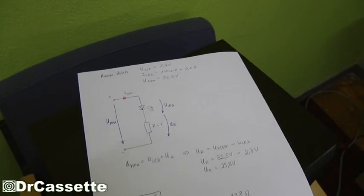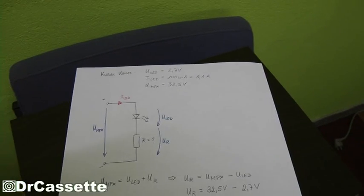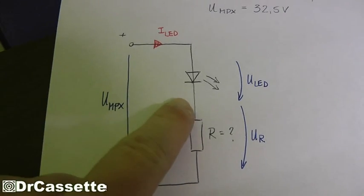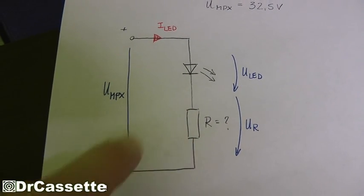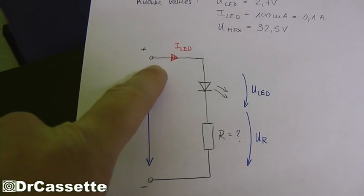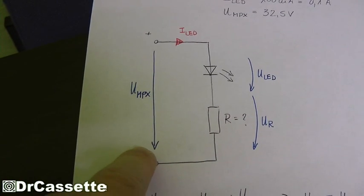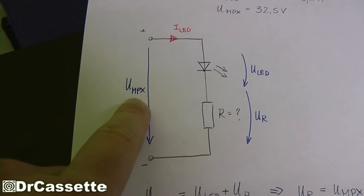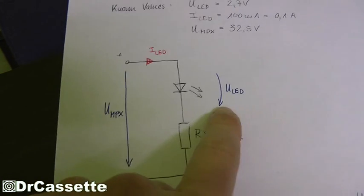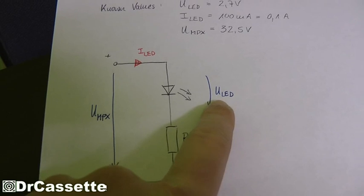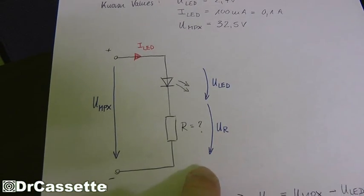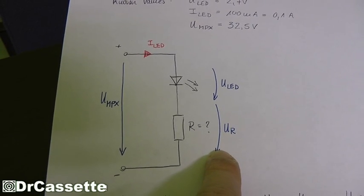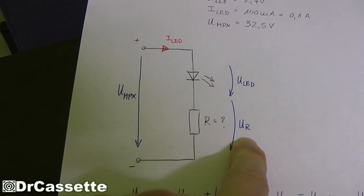Now here goes the part with calculating. This is the schematic that you'll end up with. We have the LED in series with a resistor, and that's all hooked up to the circuit board. This is the voltage we're getting out of the circuit board. I just called it UMPX because the pin on the circuit board is called MPX. This is the voltage that's flowing through the LED, or that can be measured across the LED, actually.